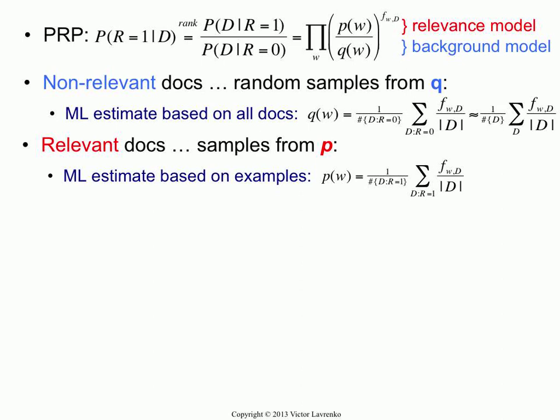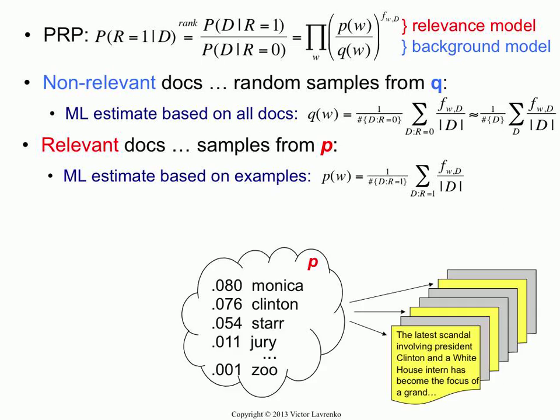Now the relevance model is supposed to represent the probability of seeing a word in a random relevant document. We have this unknown distribution p we'd like to estimate. What we assume is that relevant documents are random samples from the probability distribution. The way this document was generated is somebody took this probability distribution and started pulling words out at random and writing them down, and they happened to come out grammatical and beautiful.